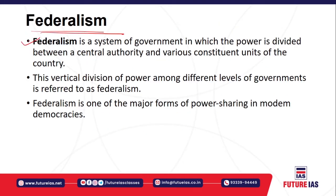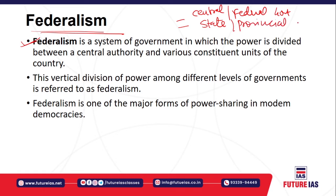Federalism is a system of government where power is divided into different constituent units — the central/federal government, the state or provincial government, and the local government. If power is divided between different constituent units, that is called federalism or federal division of powers. It is one of the most important cardinal principles of vertical division of power and is adopted by almost all major democracies.